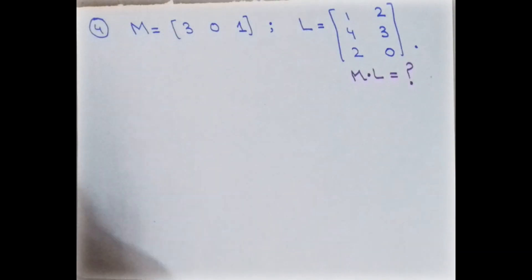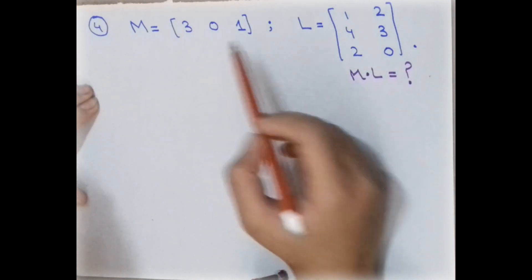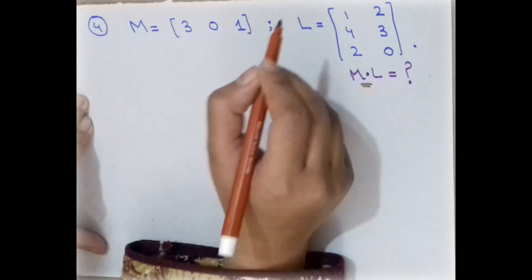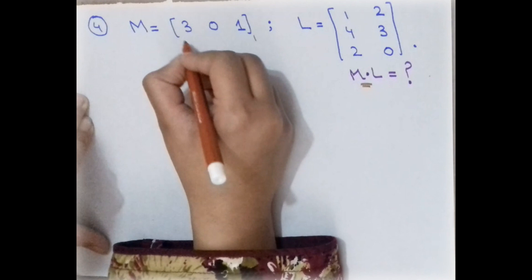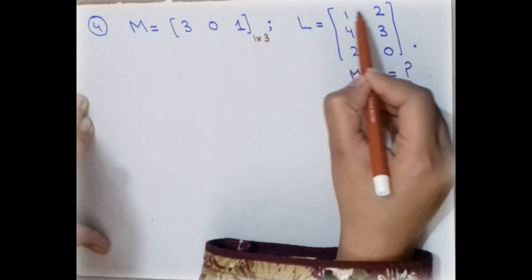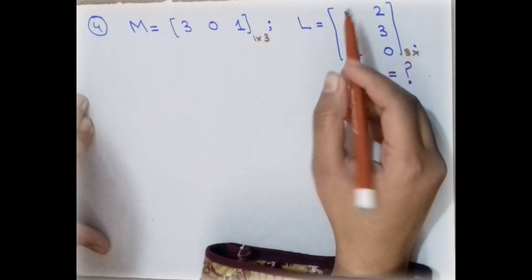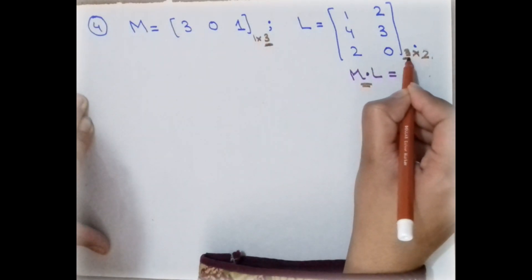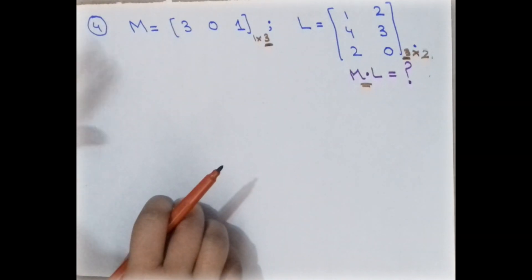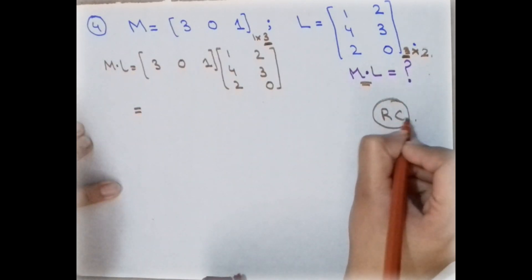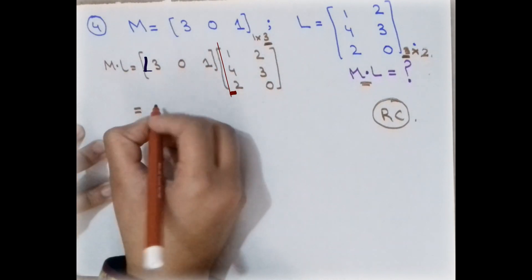This is the last example of today's lecture. We have two matrices and need to compute their product. First, check the condition: matrix A has 1 row and 3 columns, so its order is 1 by 3. Matrix B has 3 rows and 2 columns. Since the columns of the first matrix (3) equals the rows of the second matrix (3), multiplication is possible. Multiply this row with the first column of the second matrix: 3×1 plus 0×4 plus 1×2.